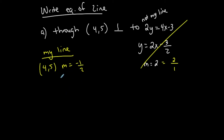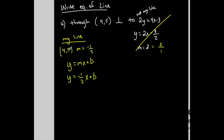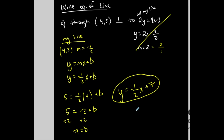Now I'll write the equation of my line using slope-intercept form. I know the slope is negative 1/2, but I need the y-intercept. The point (4, 5) is not a y-intercept because the x-coordinate is not 0. So I plug in y equals 5 and x equals 4 to solve for b. Negative 1/2 times 4 is negative 2; adding 2 to both sides gives b equals 7. So the equation is y equals negative 1/2 x plus 7.